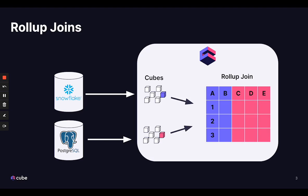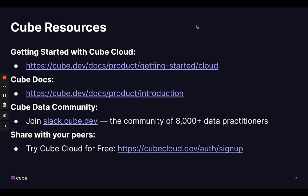To recap: in Cube, if we want to join or blend together data from multiple databases, or we don't want to materialize fields from multiple cubes together before runtime, we can employ rollup joins to still leverage the performance of Cube's fast caching layer. If you have any questions, get in touch with us on Slack, and happy data modeling.